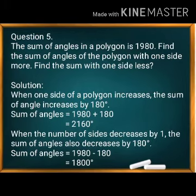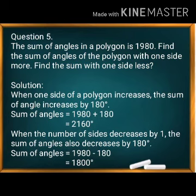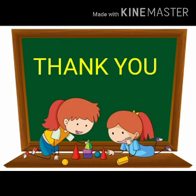Problem 5: The sum of angles of a polygon is 1,980 degrees. Find the sum with one more side, and the sum with one fewer side. When one side is added, the sum of angles increases by 180 degrees. When one side is removed, the sum decreases by 180 degrees. Thanks for watching this video.